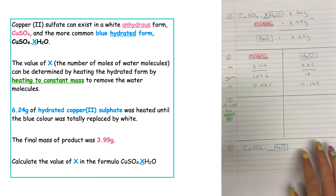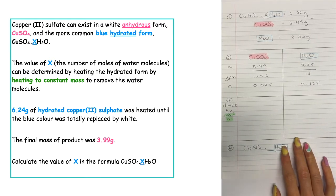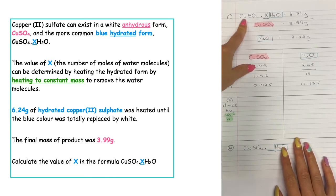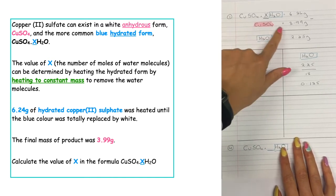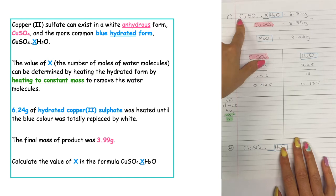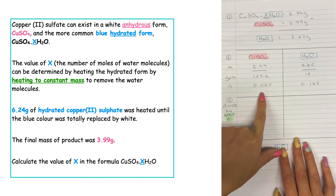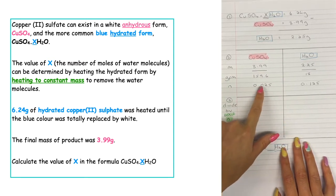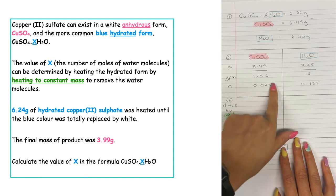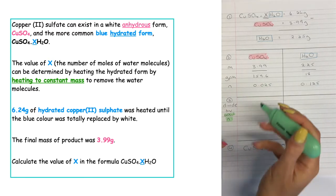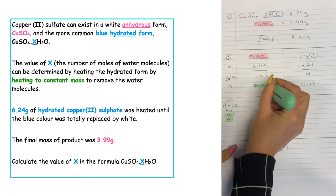At this stage it's really important to double check your working. We can use our original formula to make sure we've done this correctly. We can see in the original formula there's no number in front of the copper sulphate, which tells us we've got a one to something ratio. This means the lowest number of moles should be the copper sulphate, and we can see that 0.025 is indeed the lowest, so this step is correct.